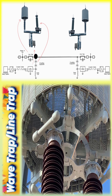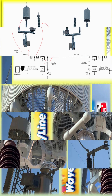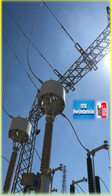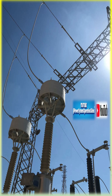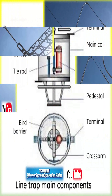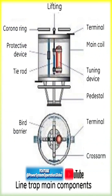In high-voltage transmission lines, apart from the usual 50 or 60 Hz power frequencies, high-frequency signals ranging from 30 kHz to 500 kHz are superimposed onto the power lines. These high-frequency signals are used for various purposes, such as teleprotection, remote control, data transmission, and relaying information between substations.